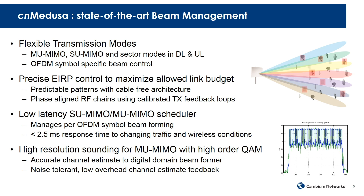The second component is precise EIRP control. This is performed to ensure the link budget is maximized, independent of the transmission mode. Algorithms predict the maximum EIRP for each beamform and adjust the TX power to ensure it complies with the regulatory limits. This is achieved with a cable-free integrated antenna and calibrated transmit feedback loops, which maintain phase and power alignment between the RF chains.